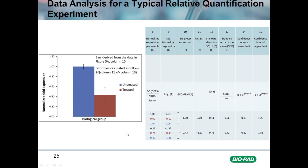For statistical analysis, it is important to use the log-transformed data. When performing parametric t-tests or ANOVA, never use the normalized expression data in the exponential space. Log-transform the normalized expression values first, as shown in column 9, and then perform all statistical tests to assess significance between groups.